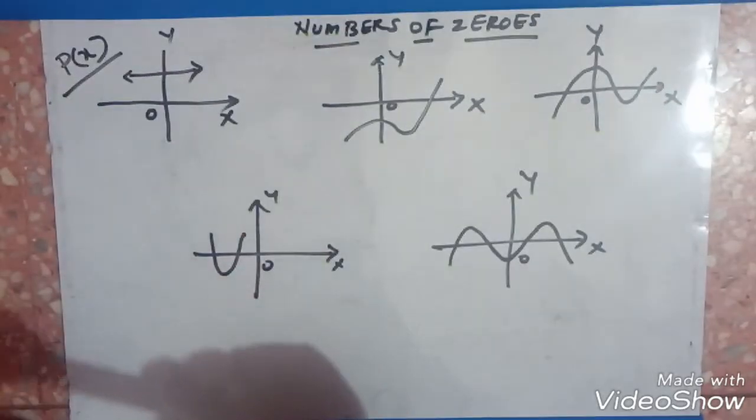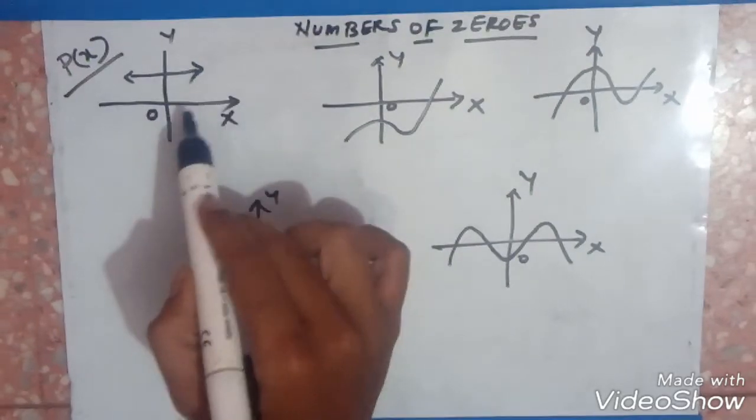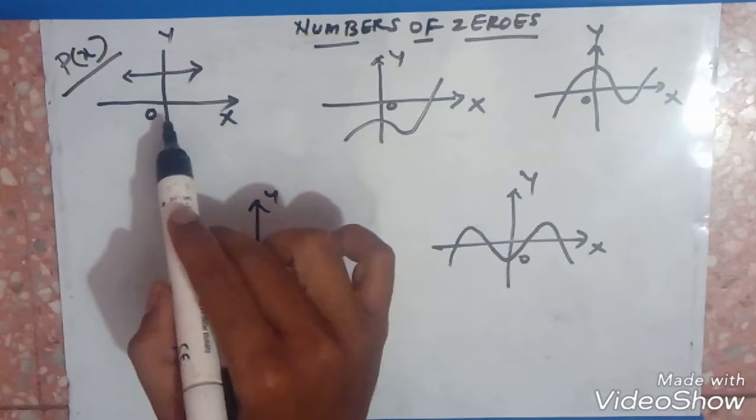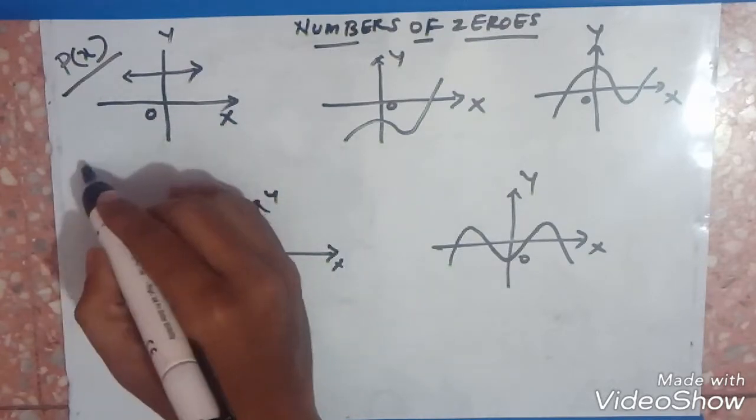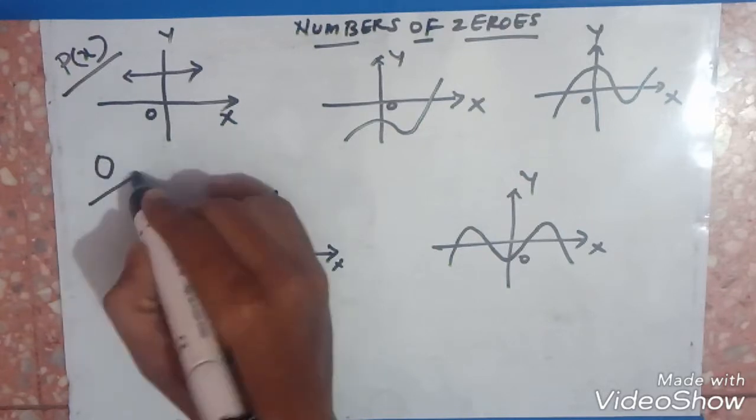In the first graph you can see it is not intersecting at no point. There is no point of intersection at the x-axis. So the number of zeros in this case are 0 for this.